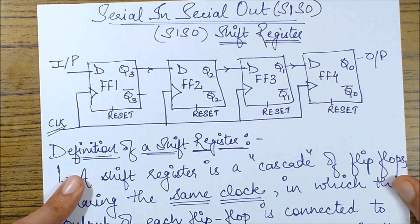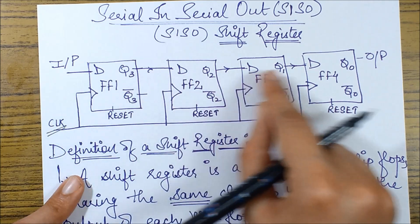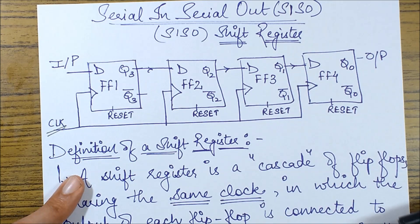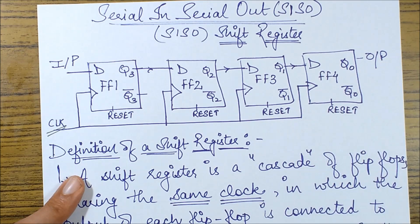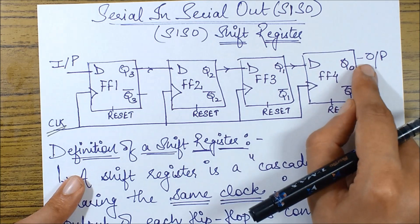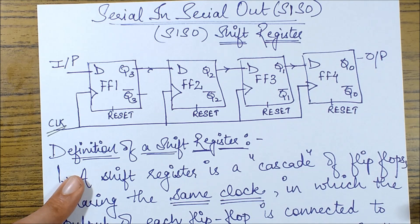And the input is being fed in serial order, and the output is also one, so there is one entry point, one output point, and this is therefore a classic example of a serial in serial out register.